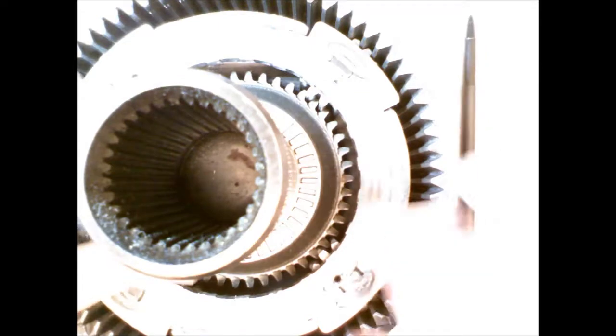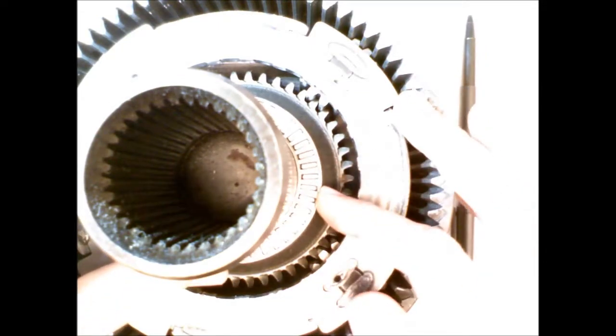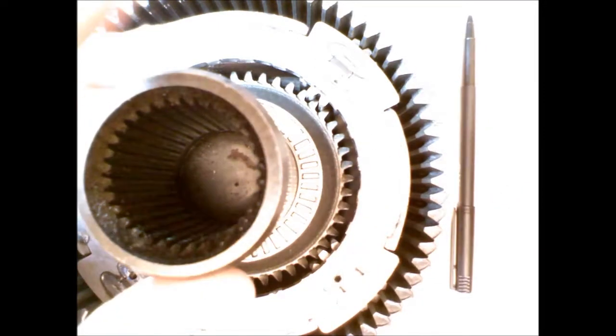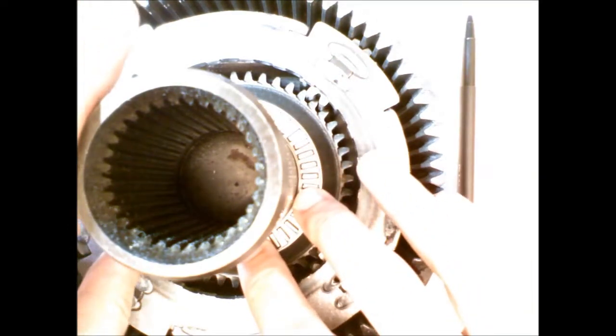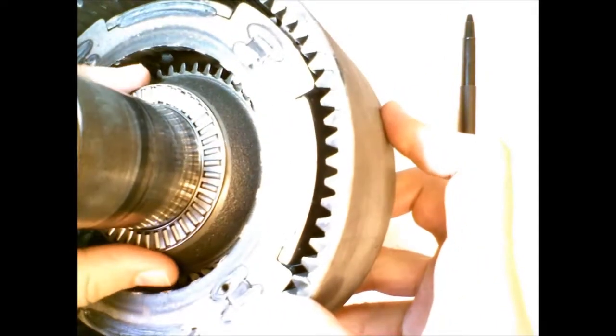Now, we have a needle thrust bearing right here that helps to separate and allow relative rotation between two components in the transmission. So you can see where that is right there.